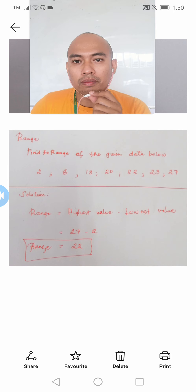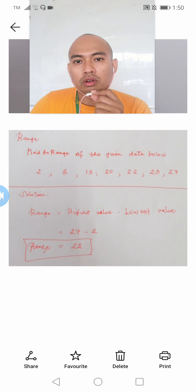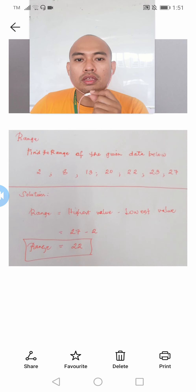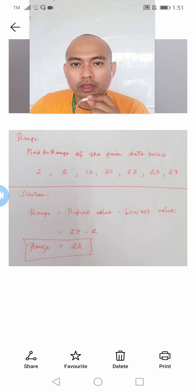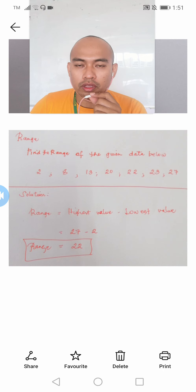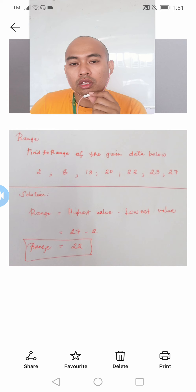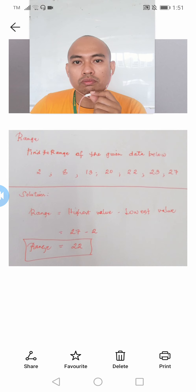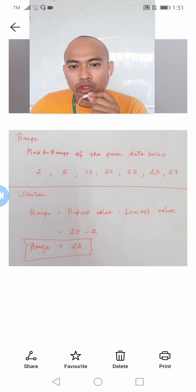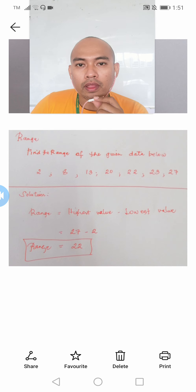So this will be a sample computation about the range, applying the formula: highest value minus the lowest value. Considering the data given, we have: 2, 8, 13, 20, 22, 23, and 27. Our target here is to identify the value of our range. Using the formula — highest value minus the lowest value — we identify that the highest value is 27 and the lowest value is 2. Applying the formula, we come up with the value of the range which is equal to 25.